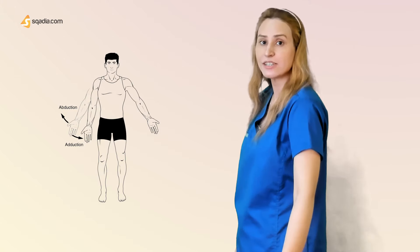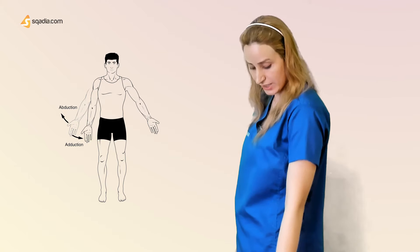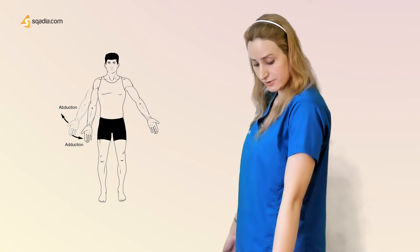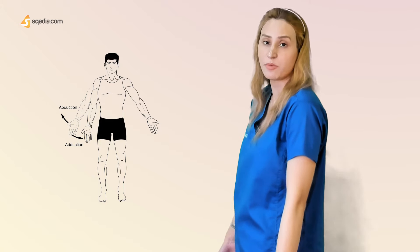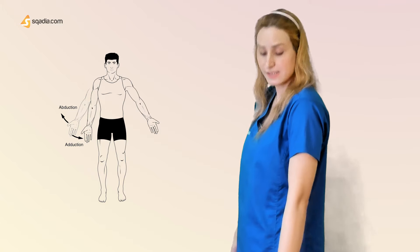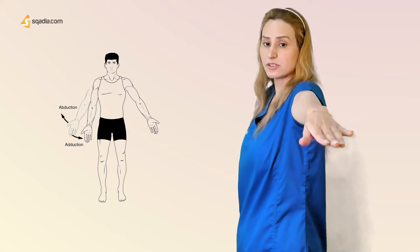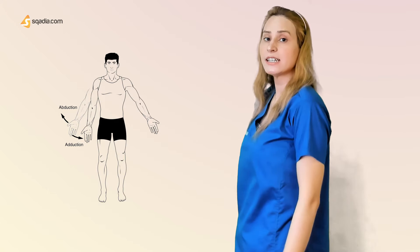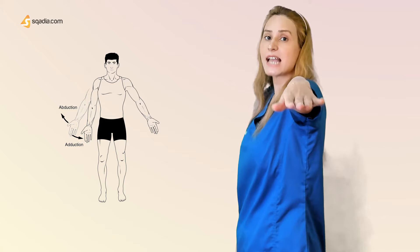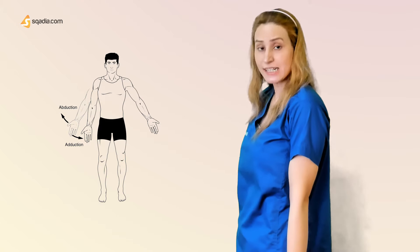Other movements at the upper arm: we are basically concerned about adduction, which is bringing your limb toward the body — converging your arms to the median part of the body. And then abduction, which is taking your arm away from the body. So abduction takes the arm away, and adduction brings it back toward the body.